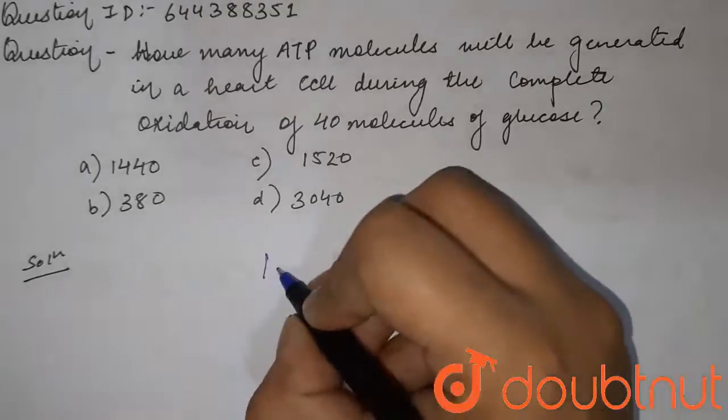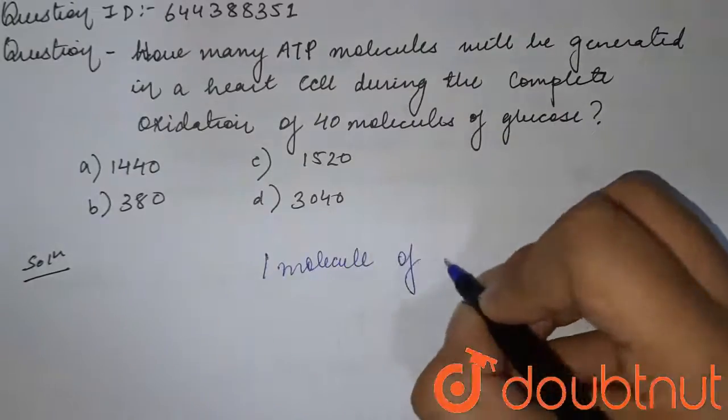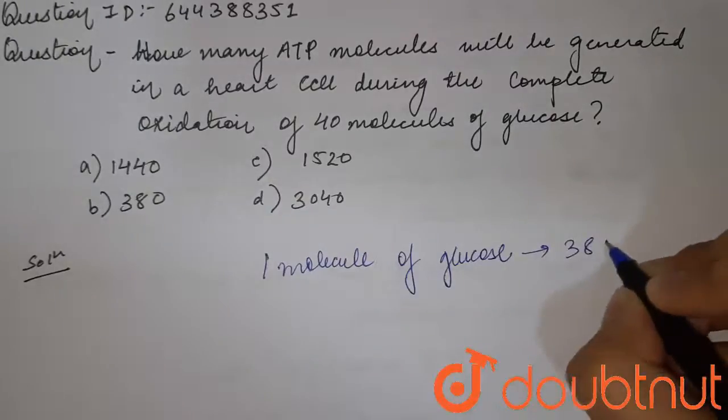So students, first of all, for the oxidation of one molecule of glucose we need 38 molecules of ATP.